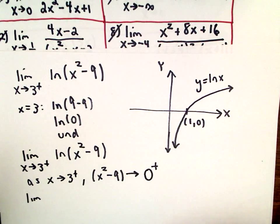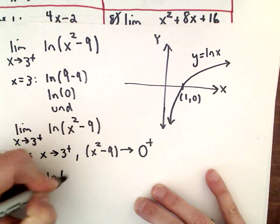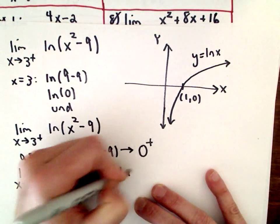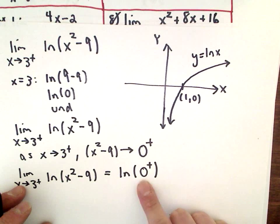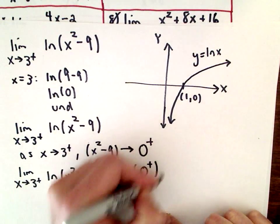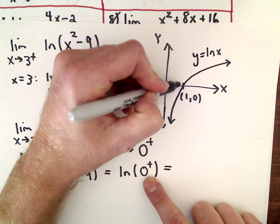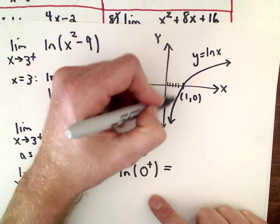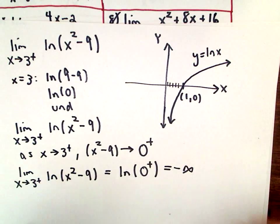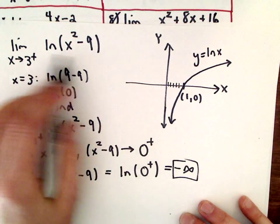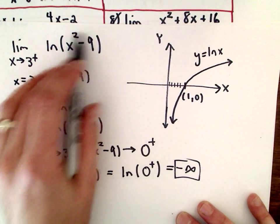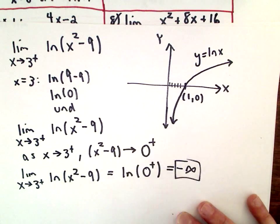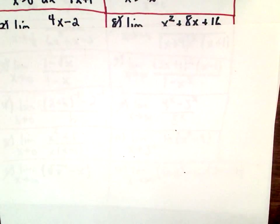We can write this as the limit as x approaches 3 from the right of ln(x²-9), which is the ln of 0 from the right. As x gets closer and closer to 0 from the right, the y values on the natural logarithm graph go down to negative infinity — and that is your solution. Note: I'm graphing the natural logarithm of x, not of x squared minus 9, so be careful about that distinction.